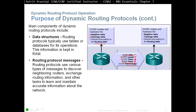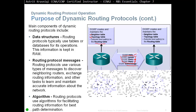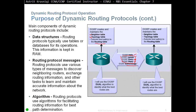Each routing protocol has different kinds of messages and different algorithms. They run the algorithm after exchanging all routing messages, then try to build a routing table by picking the best path to the destination and adding it. For example, EIGRP uses the DUAL algorithm.